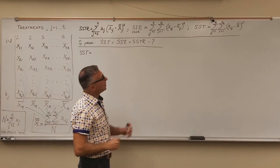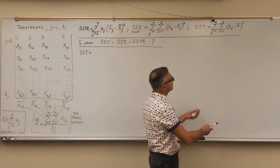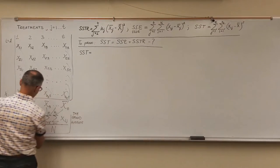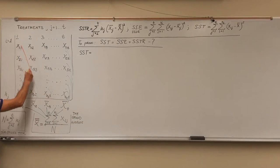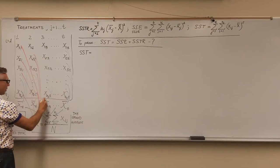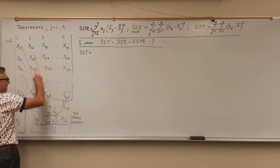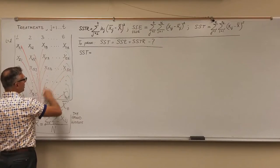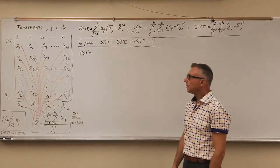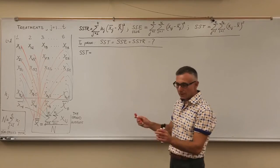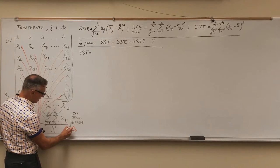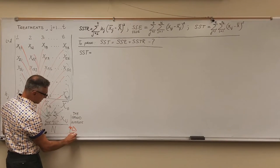And SST is the sum of squares for the total error — the difference between each individual observation and the grand average, shown in orange. So those are all possible variabilities in one-way ANOVA, the simplest model. The three components of variance have a kind of additive relationship: SST equals SSTR plus SSE.